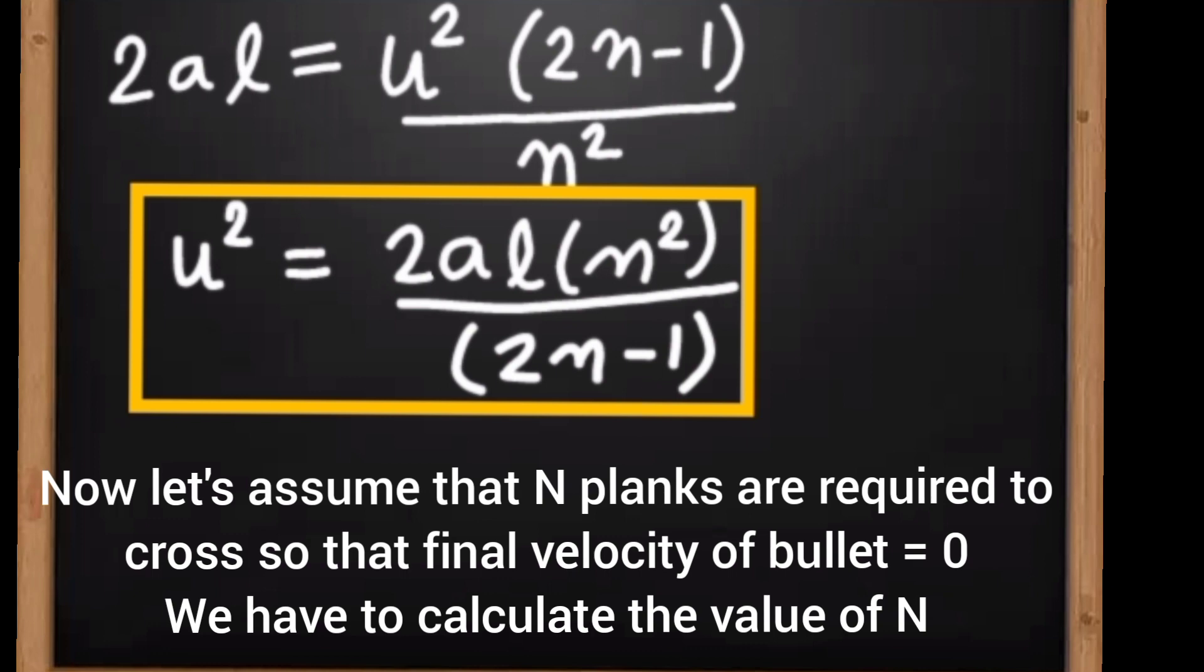As we have calculated initial velocity, we know that N blocks are required so that the final velocity of the bullet becomes zero. So we have to calculate the number of blocks required, which is here denoted by capital N.